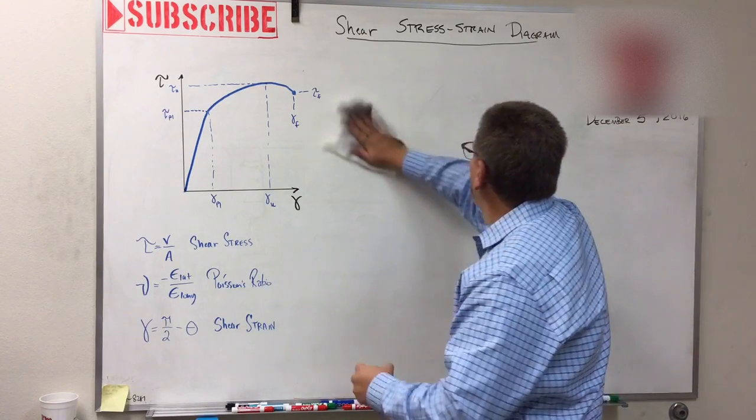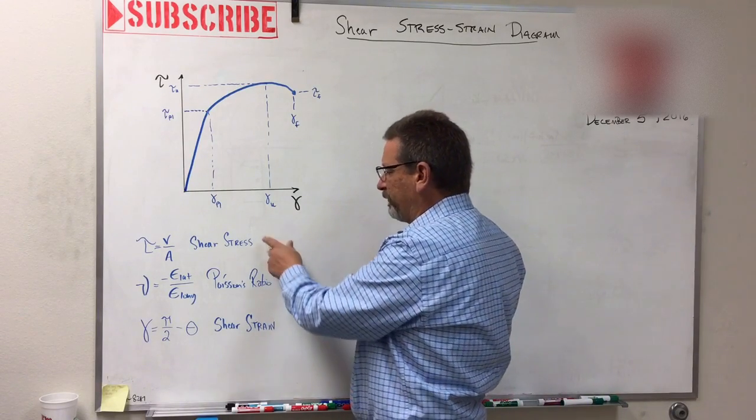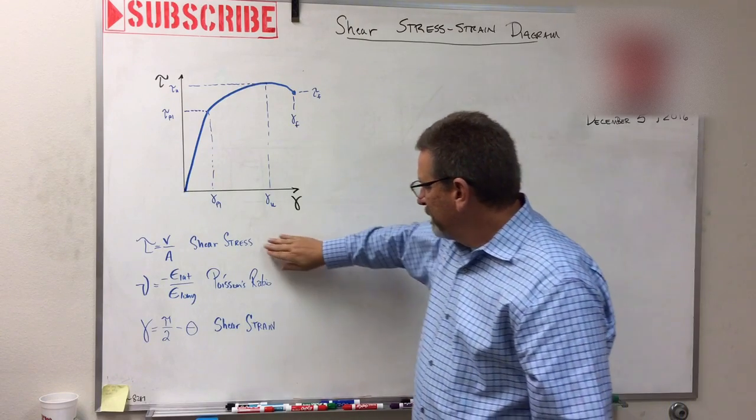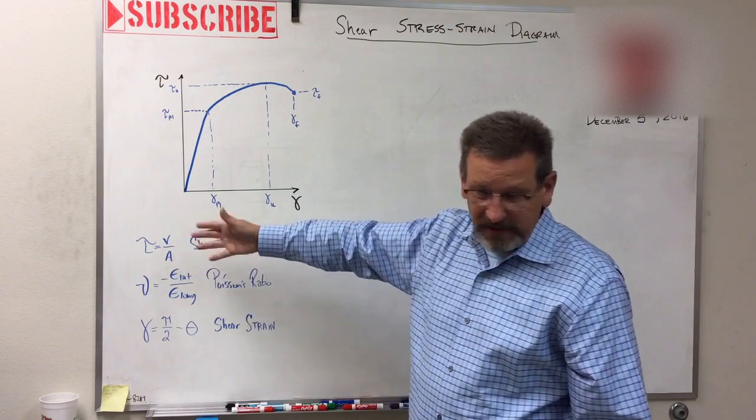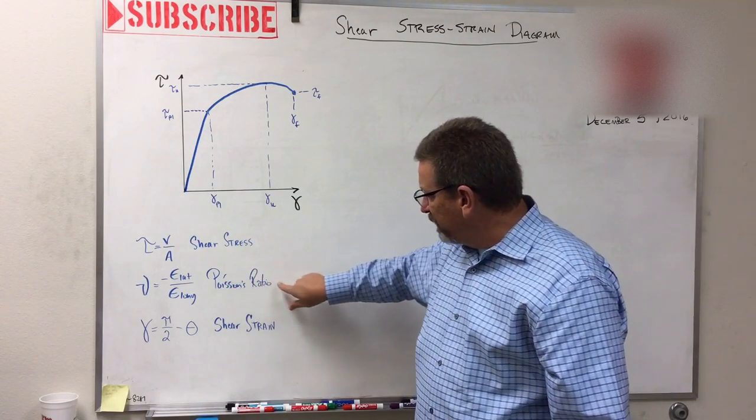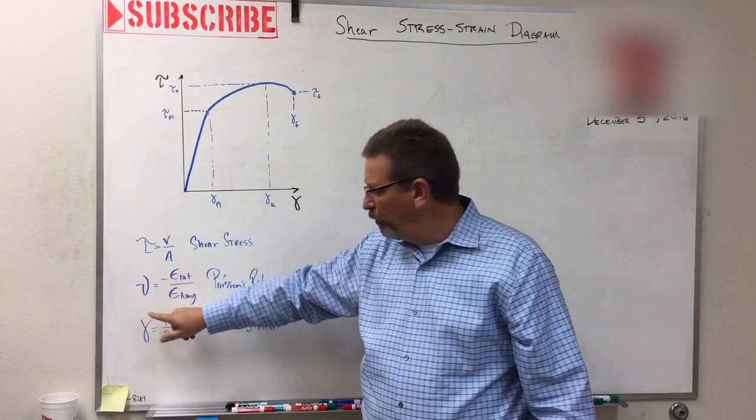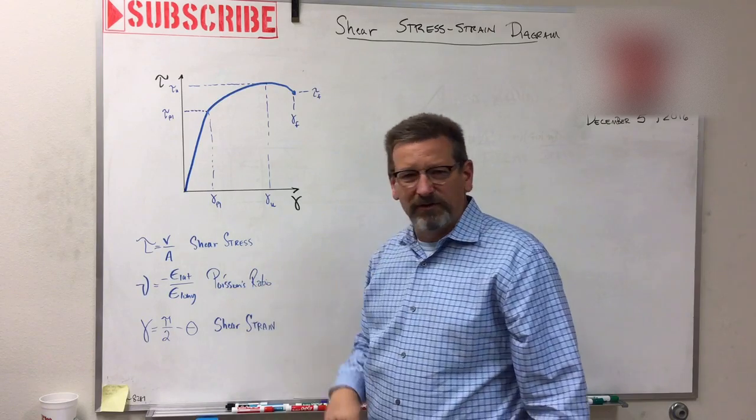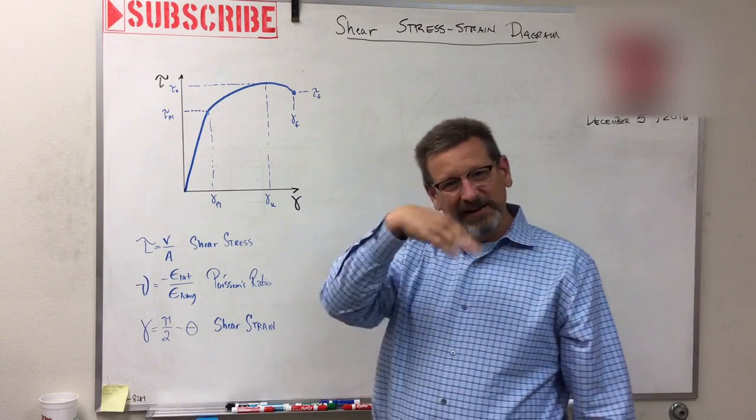So what do we have on this diagram here? Here's all our things that relate to this graph. We talked about shear stress—that's just V over A or P over A. And then I've got Poisson's ratio. Remember, Poisson is given by the Greek letter nu. It's negative strain latitude divided by strain longitude, and we've talked about that in the last video.